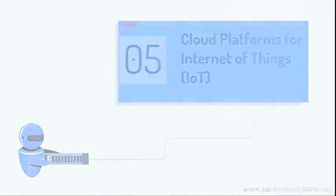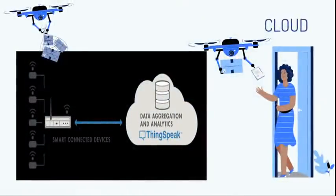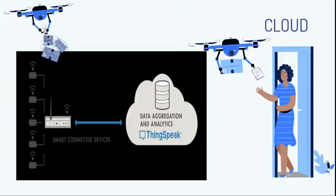Cloud platforms for Internet of Things — cloud is one of the main sources for IoT because we collect data and need to store it in the cloud. You can use different types of clouds, but the most useful, user-friendly, and free one is ThingSpeak Cloud. You can aggregate your data in ThingSpeak and do analytics. After creating an account, they will give you an API key to collect data from the cloud to your local PC disk.